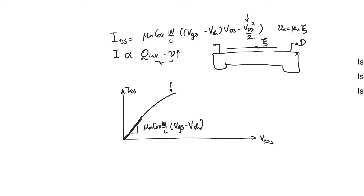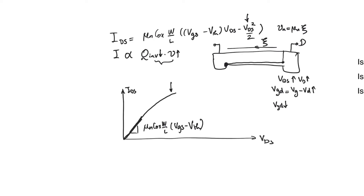Because we don't see a linear increase, we have to think about what happens to Q_inversion, the total charge in the channel. V_gs remains the same, so charge at the source end of the channel stays the same. But as we increase V_DS, V_drain increases. Since V_gd equals V_gate minus V_drain, increasing V_drain leads to a decrease in V_gd, meaning less potential coupling and less charge at the drain end of the channel, giving a tapered charge profile.